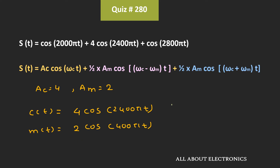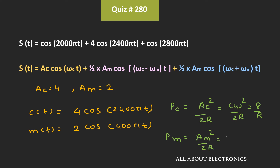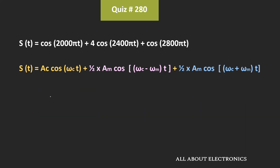The power of the carrier signal is equal to AC² divided by 2R. Since we don't know the value of the load, we consider it as R. That is equal to 4² divided by 2R, which is equal to 8/R. Similarly, the power of the message signal is equal to AM² divided by 2R, which is equal to 2² divided by 2R, equal to 2/R. That means the ratio of the power of the message signal to the carrier signal is equal to (2/R) divided by (8/R), which equals 1/4 or 0.25.